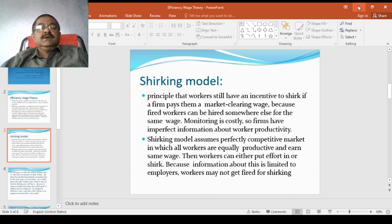Here is the shirking model. The principle is that workers still have an incentive to shirk if a firm pays them a market clearing wage, because fired workers can be hired somewhere else for the same wage. If there are good workers, there will be opportunities somewhere else. Monitoring is costly, so firms have imperfect information about workers' productivity. The shirking model assumes a perfectly competitive market in which all workers are equally productive and earn the same wage. Workers can either put effort in or shirk. Because information is limited to the employers, workers may not get fired for shirking.